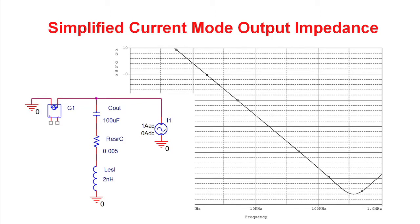The second output impedance we're going to discuss is current mode controlled. In this case, we have essentially turned the output filter inductor into a current source, and it drives the output filter capacitor along with its parasitics. As you sweep the impedance of this control scheme, you see it's quite different from voltage mode. Rather than having low impedance at low frequency, we have the output impedance of the current source, which is basically an open circuit. So this curve is simply the output impedance of the output filter capacitor — it starts off capacitive, runs into the ESR minimum, and then turns inductive at higher frequencies.